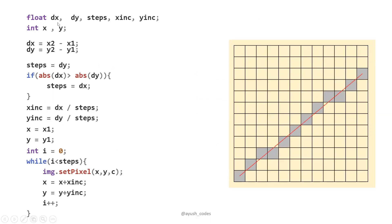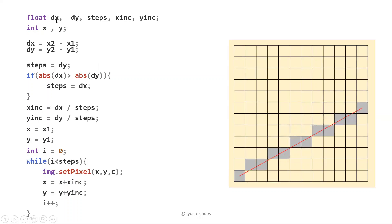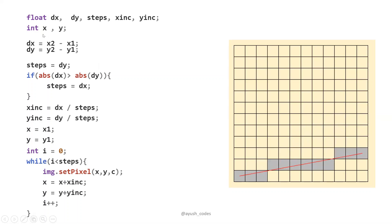The algorithm for DDA is presented here. We declare variables such as dx, dy, steps, x increment, y increment, then x and y.